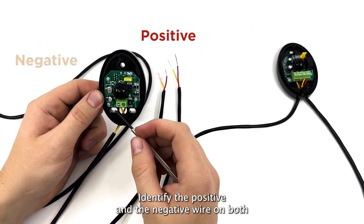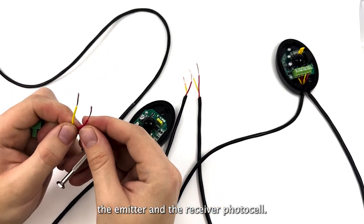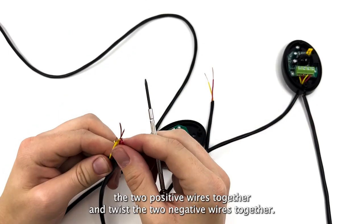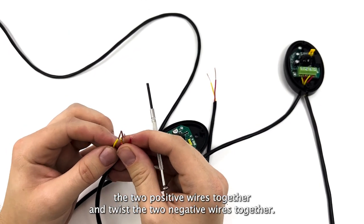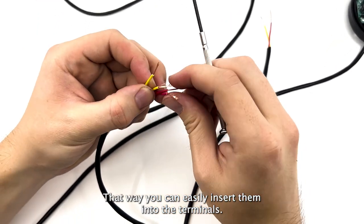Identify the positive and the negative wire on both the emitter and the receiver photocell. Twist the two positive wires together and twist the two negative wires together. That way you can easily insert them into the terminals.